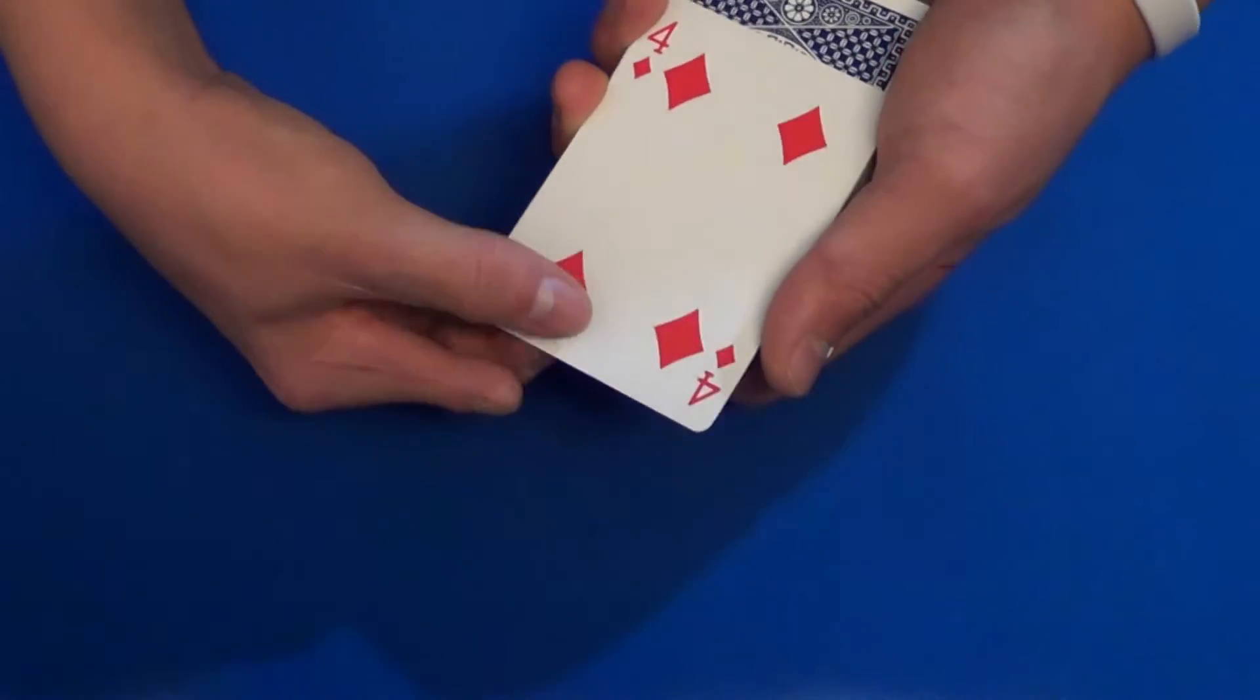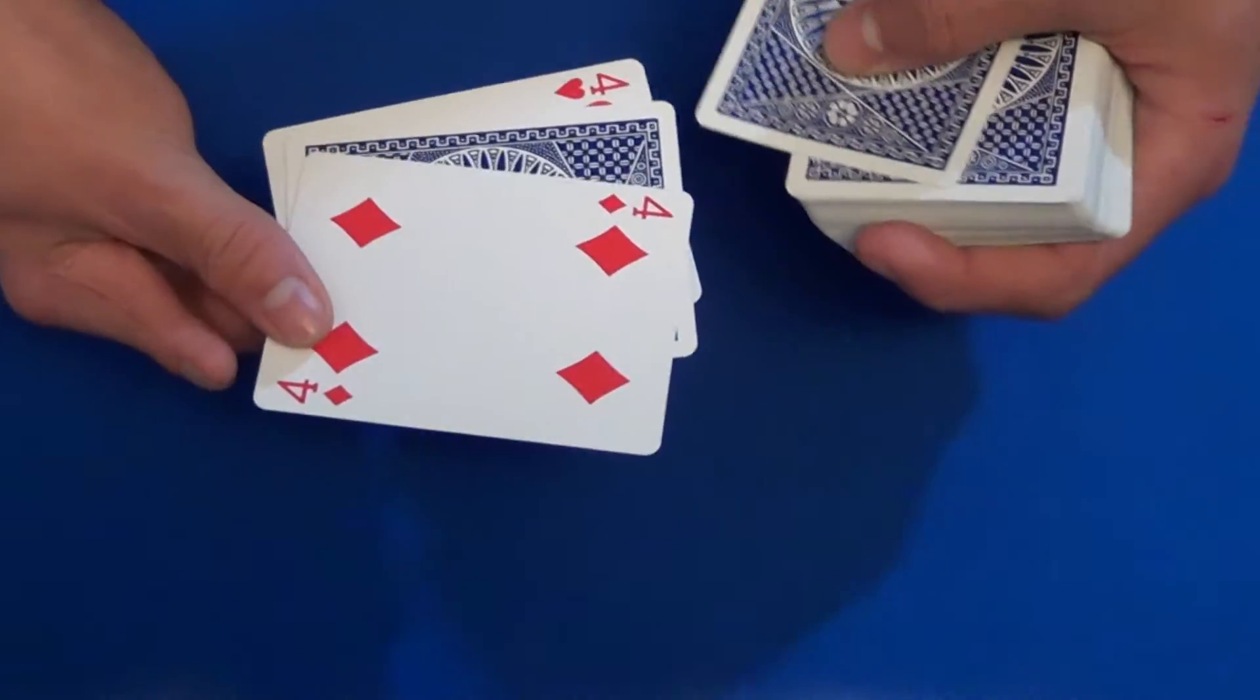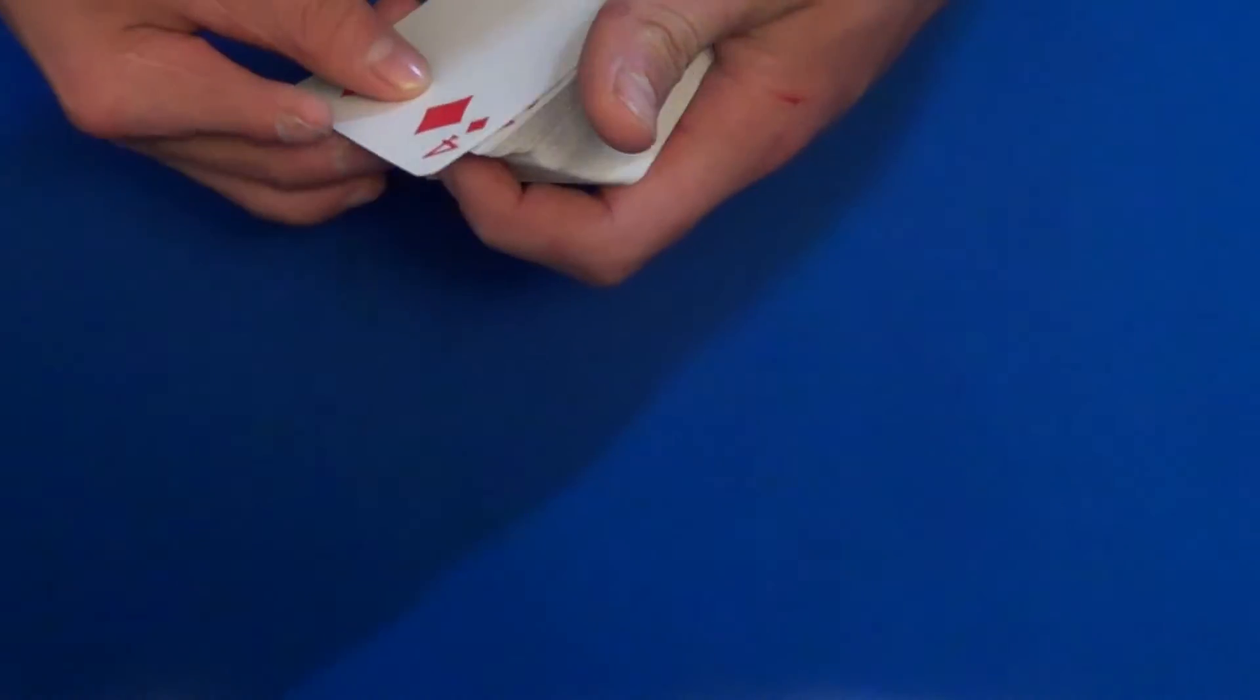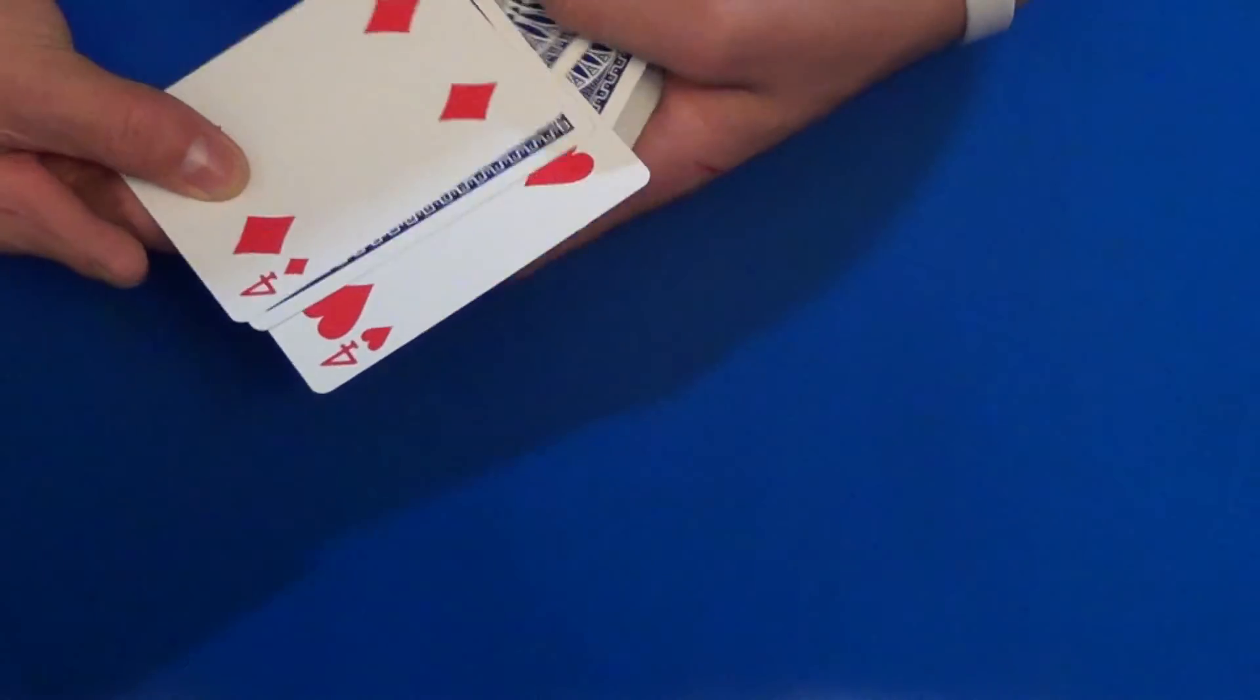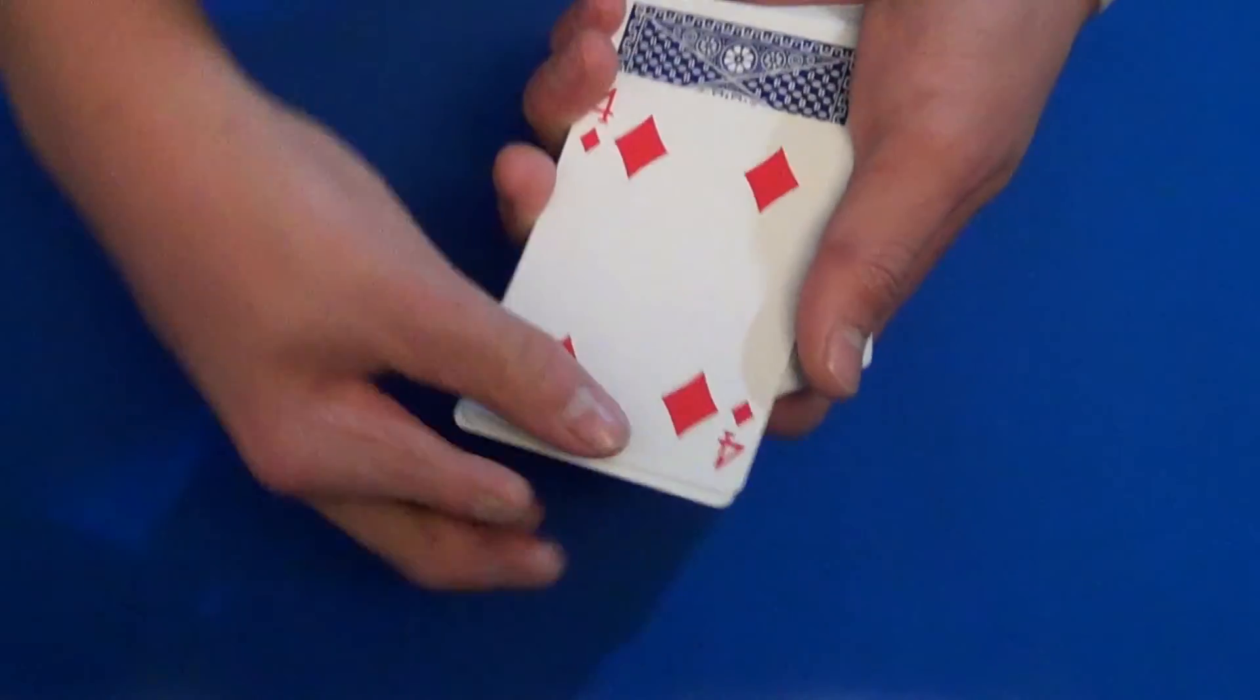Then you're going to pull this next four upwards, and then just in one quick sweeping motion you pull it out. Because if you do it slowly, here's what it's going to look like: you have all the cards out-jogged here, just like so. All the cards are out-jogged.